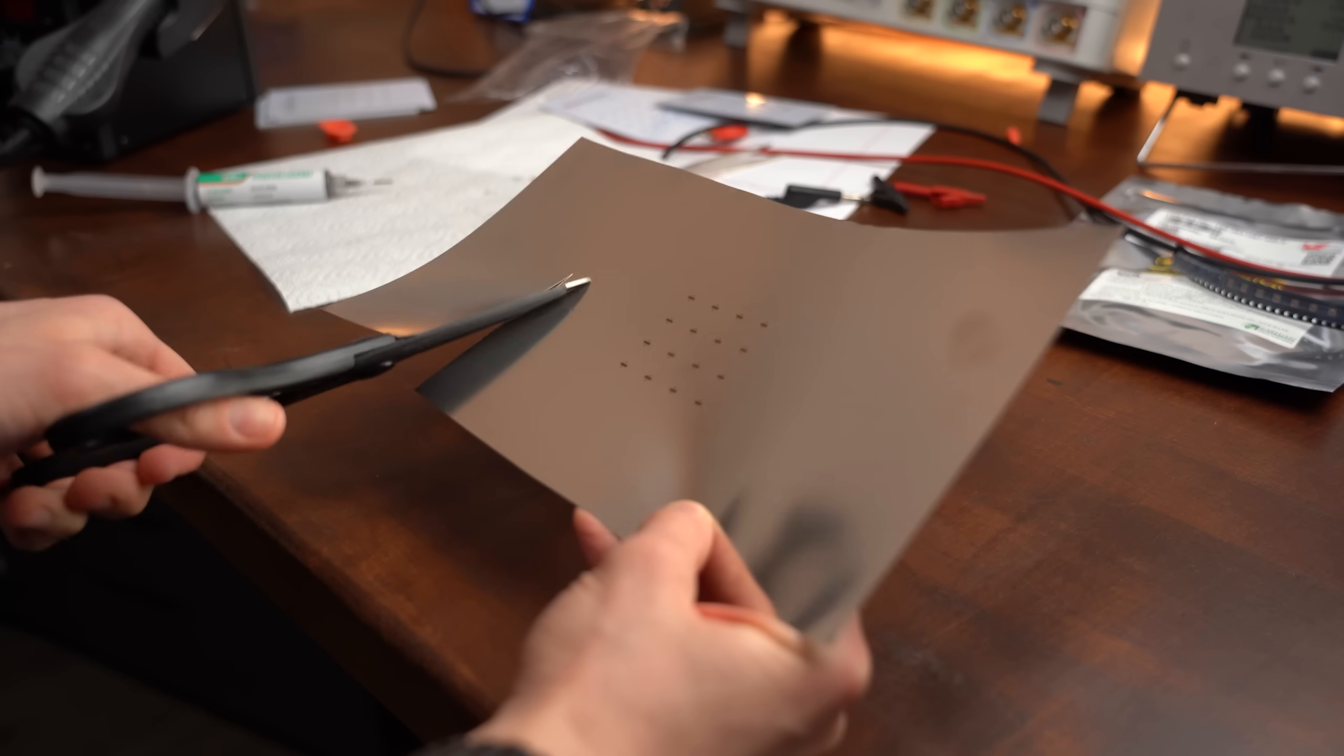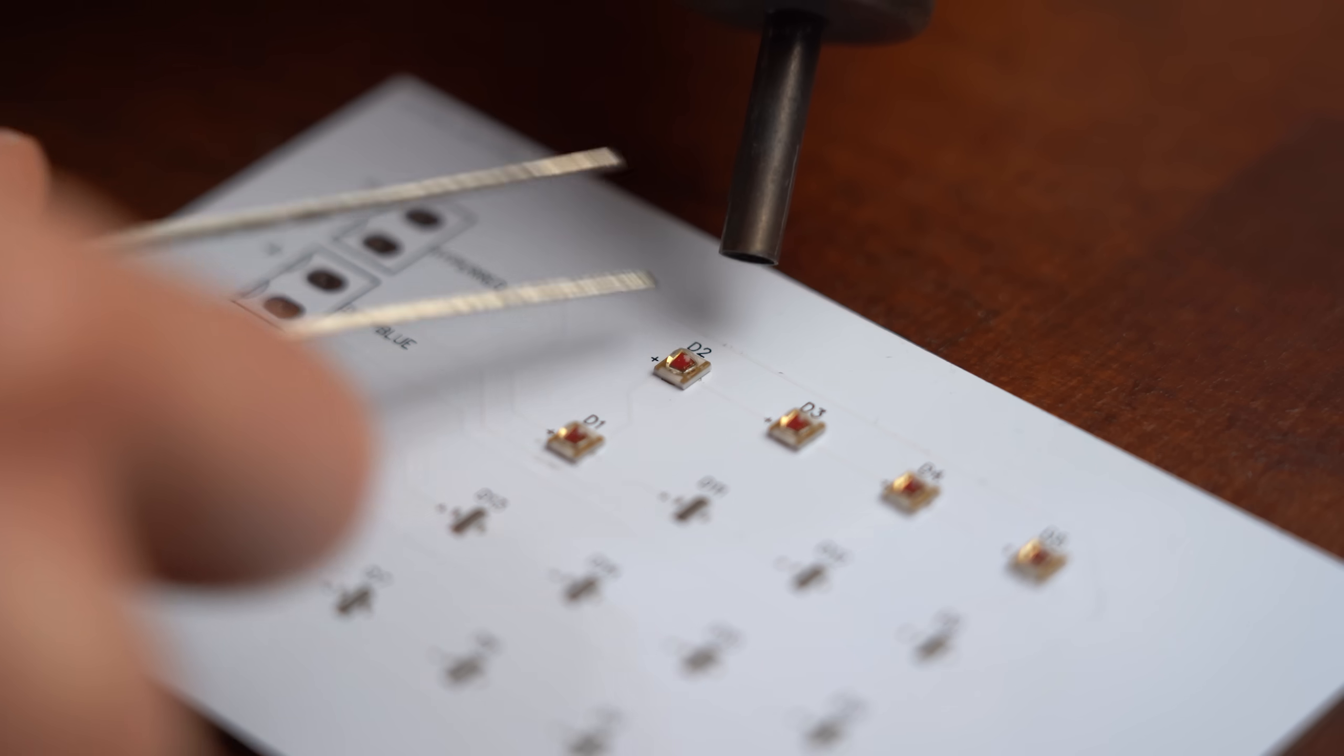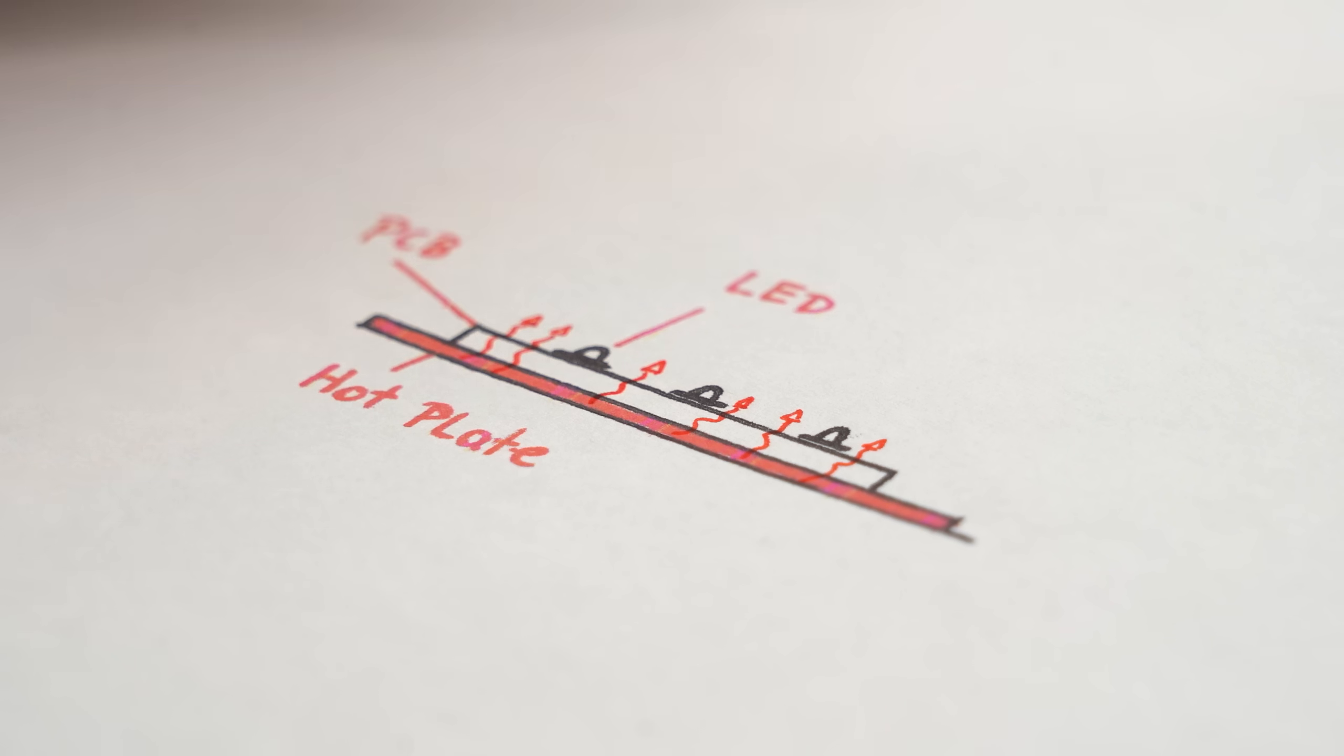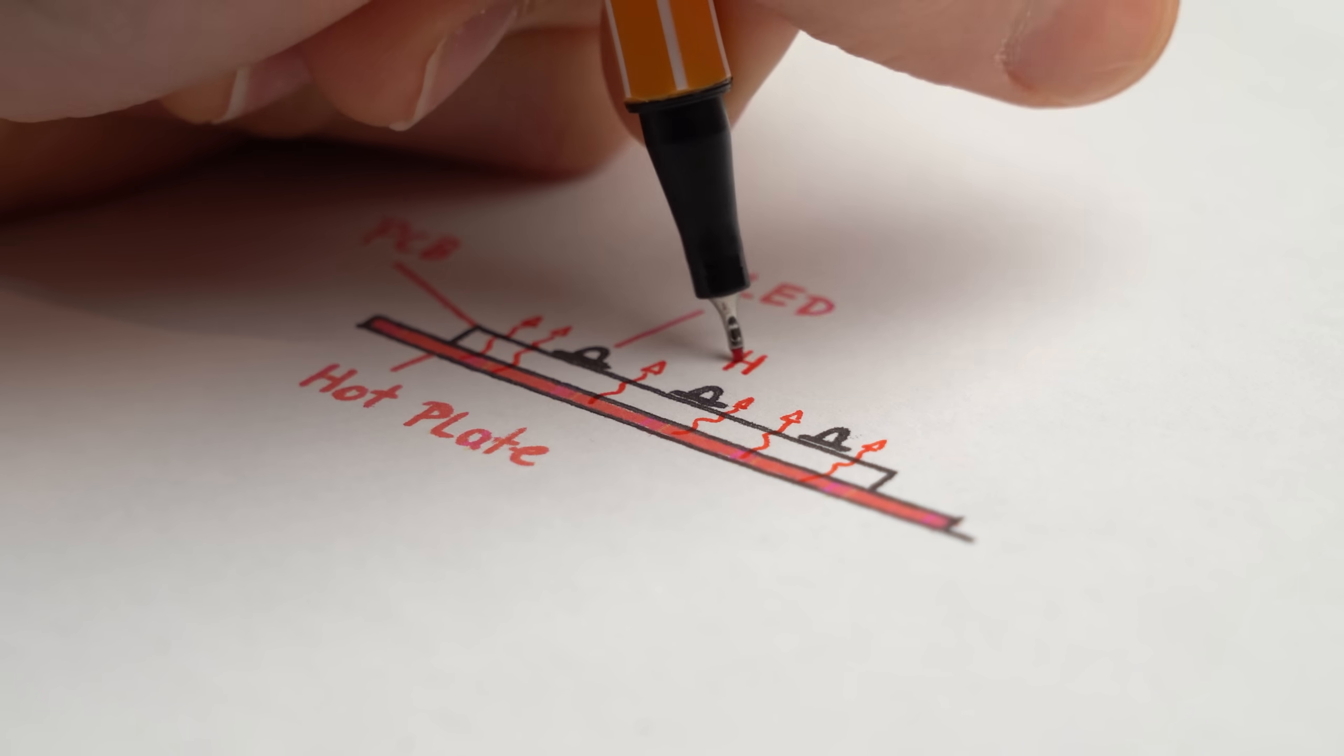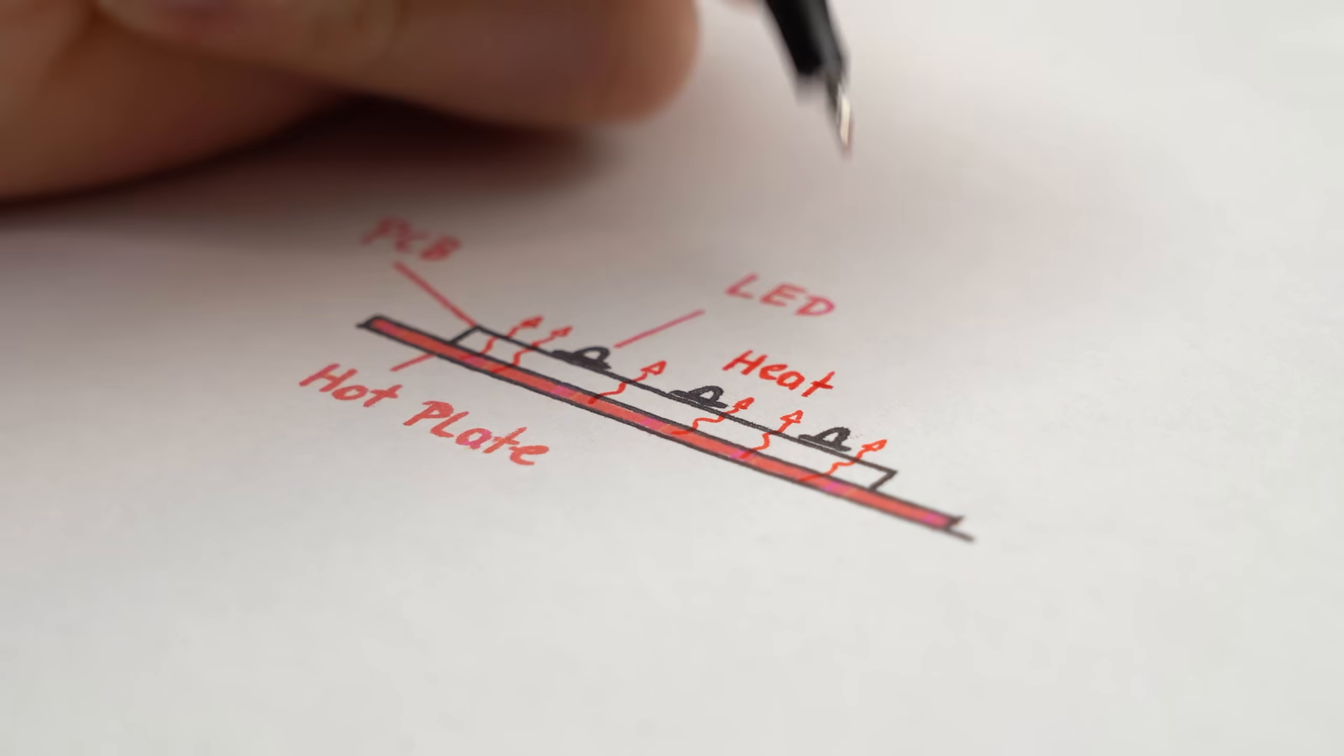But besides that everything worked out just fine. Spreading the solder paste with the stencil was no problem and also using hot air to reflow solder the LEDs turned out to be successful even though I think using a hot plate for reflow soldering would have been more appropriate for such an aluminum PCB.